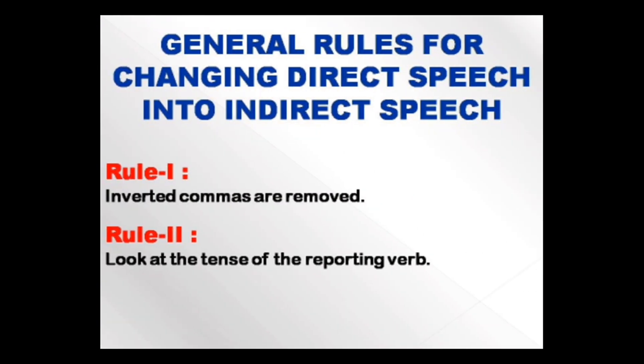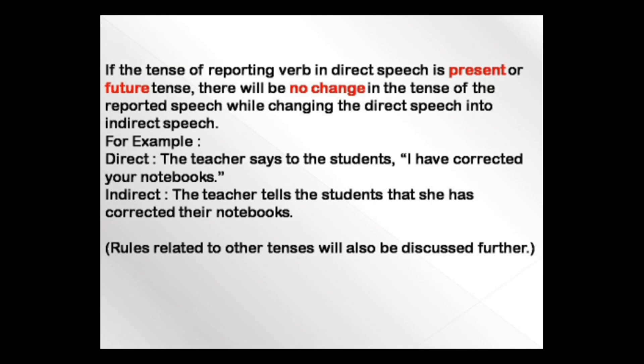Now let's discuss the rules for changing direct speech into indirect speech. The very first rule: you should remove inverted commas. The reported speech in direct speech is in inverted commas, but in indirect speech you remove them. The second rule is very important: you have to look at the tense of the reporting verb. If the reporting verb is in present tense or future tense, the tense inside the inverted commas will remain the same.